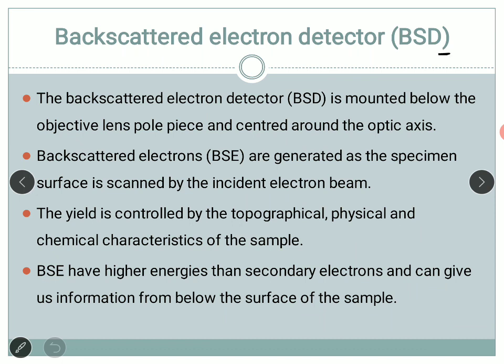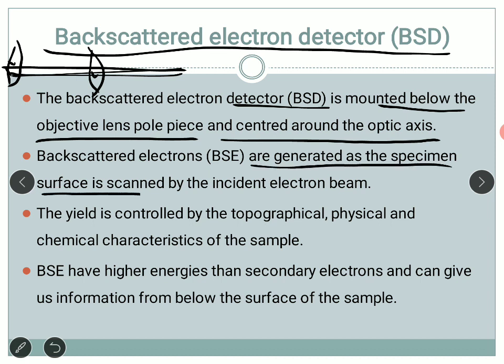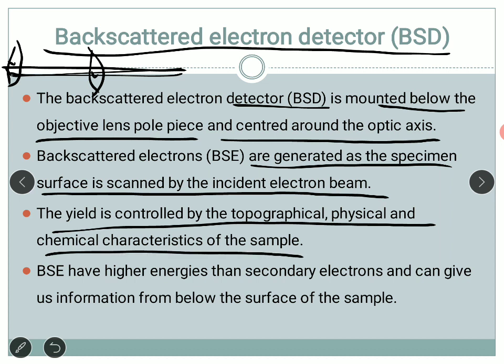For the backscattered electron detector, the positioning is different. These detectors are mounted below the objective lens pole piece and centered around the optic axis, just above the sample. They are generated as the specimen surface is scanned by the incident electron beam, along with secondary electrons. The yield of backscattered electrons is controlled by the topography and the physical and chemical characteristics of the sample. This means backscattered electrons can provide information about topography as well as physical and chemical properties. Backscattered electrons have higher energy than secondary electrons but lower resolution, giving information from below the surface.